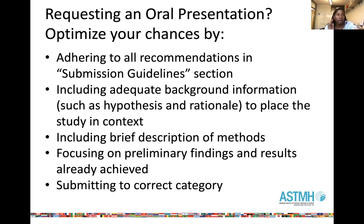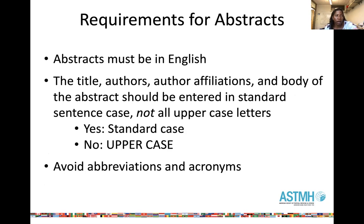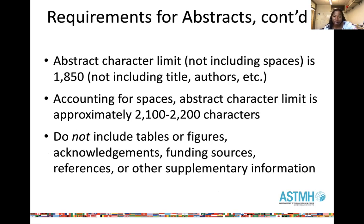Next, you want to provide a brief description of the methods, focus on your findings, and provide conclusions that you draw from your findings. Another important piece of the abstract submission process is to use the correct abstract category. You will see a list of topics provided in the abstract submission site, so please give this some consideration to ensure that you're submitting to the appropriate category. Abstracts must be submitted in English, in standard case — not in uppercase letters — and we really encourage you to avoid abbreviations and acronyms. The character limit is 1,850 characters, not including the title or authors; accounting for spaces, approximately 2,100 to 2,200 characters total. Do not include tables or figures in your abstracts.